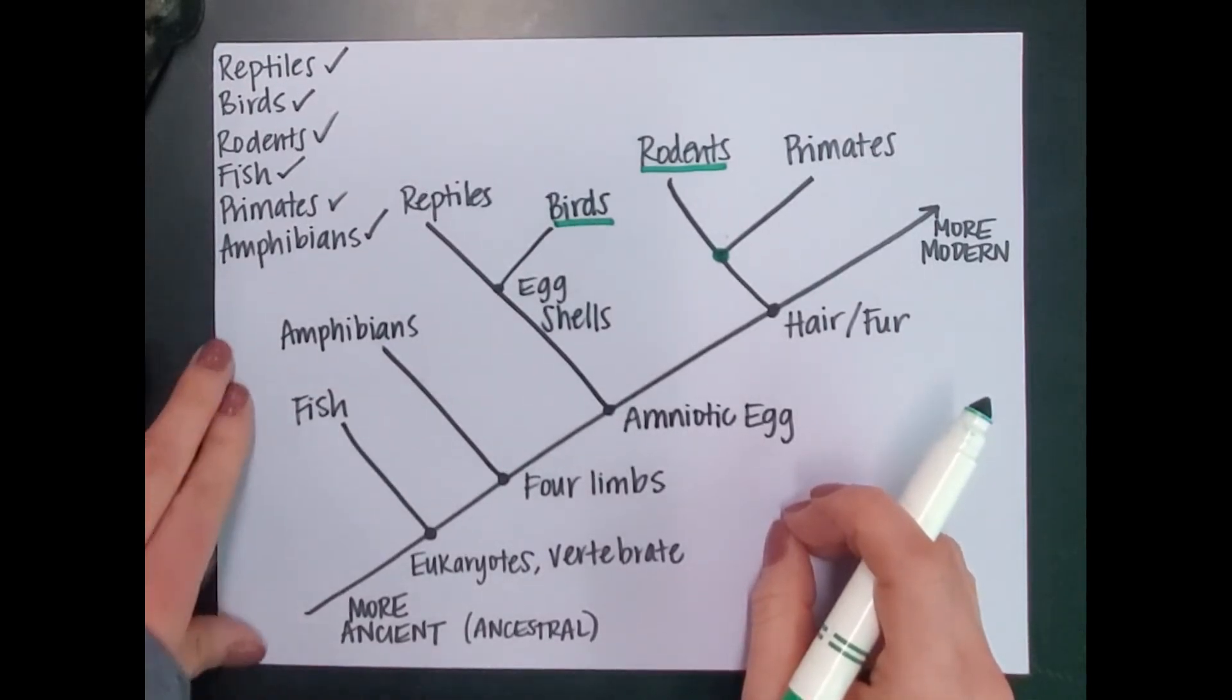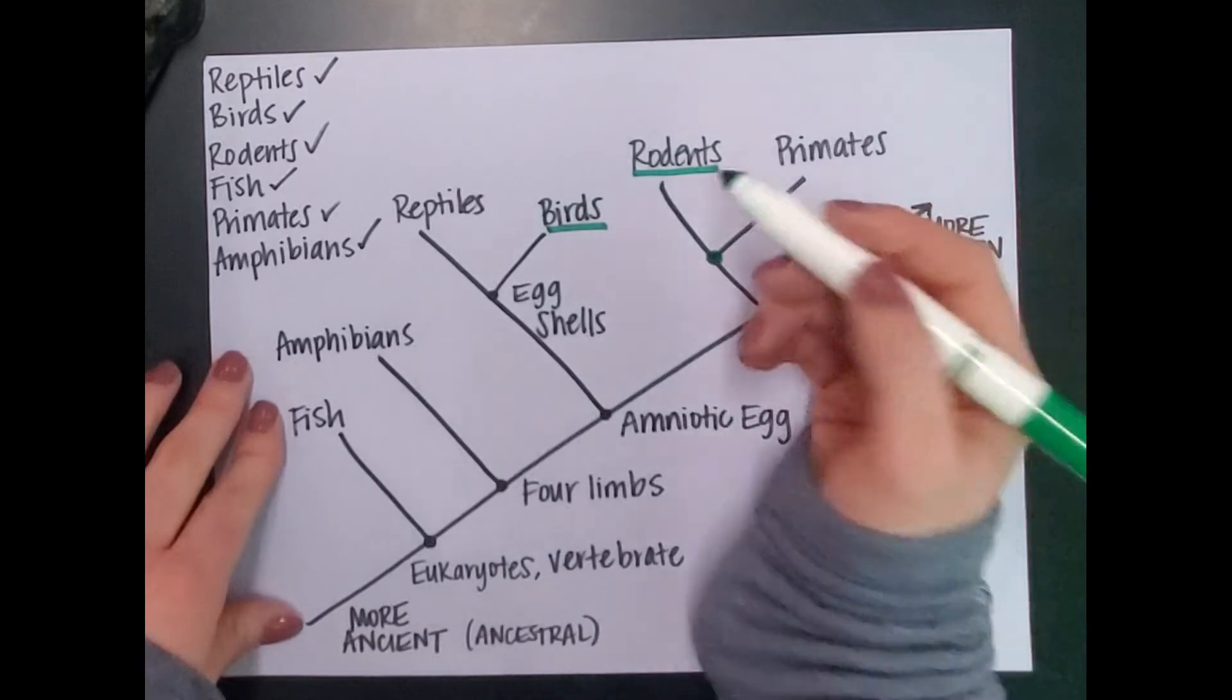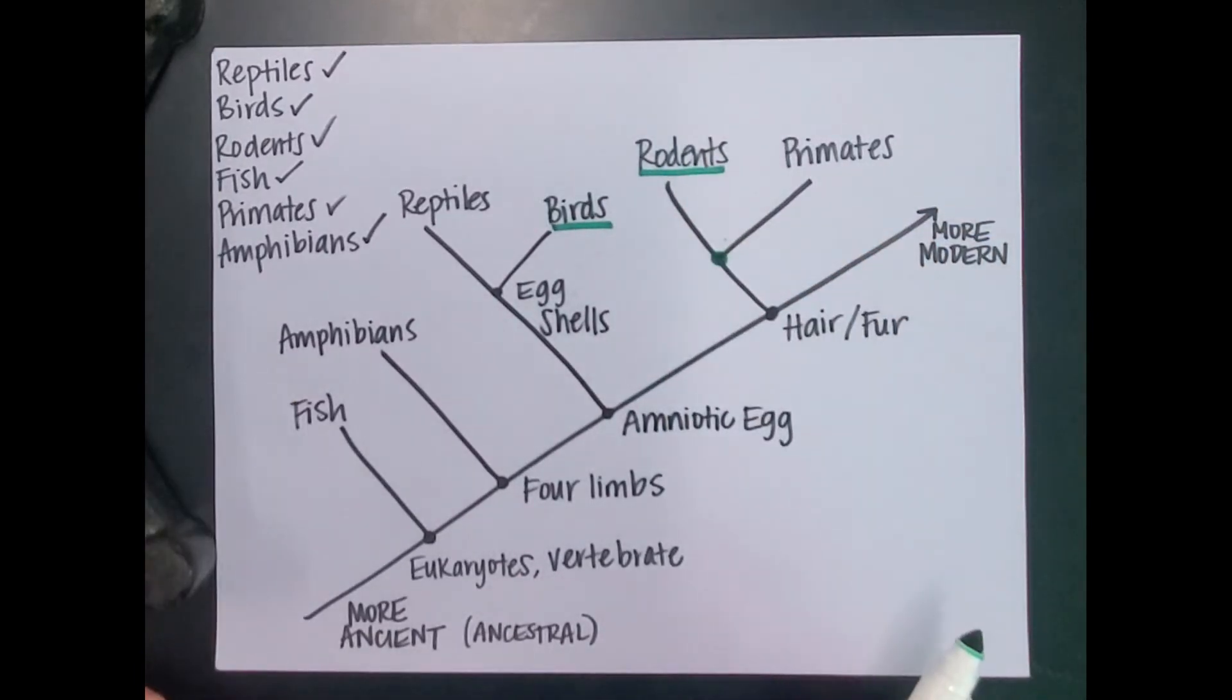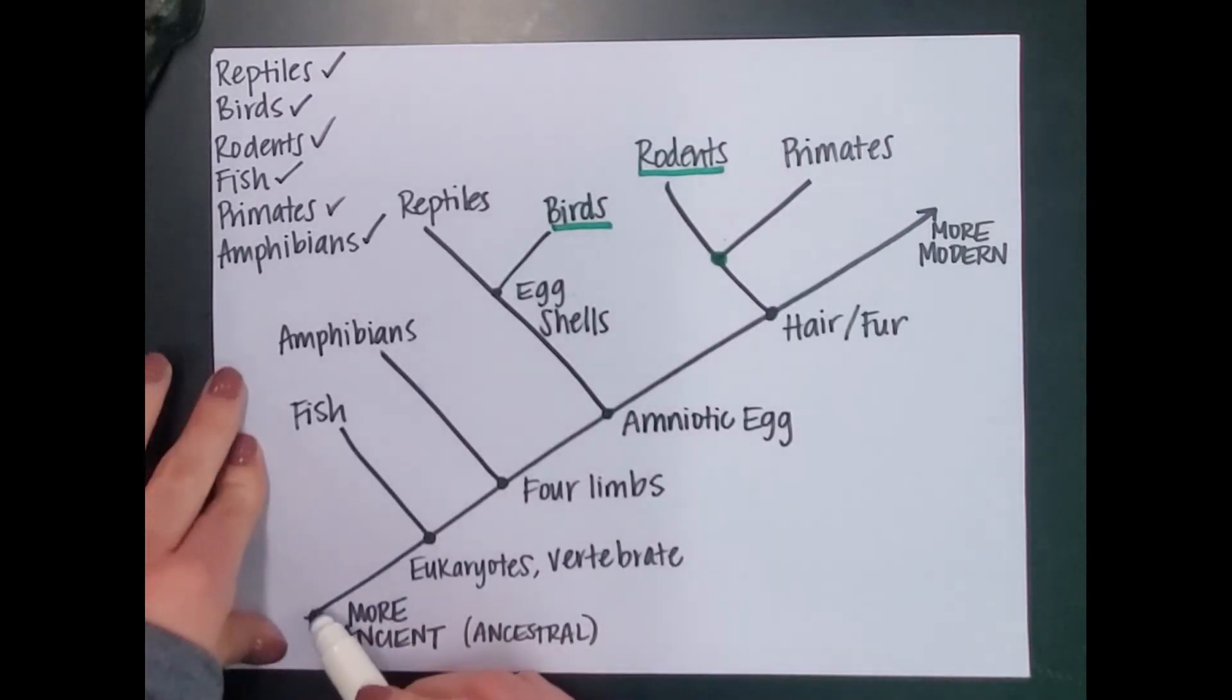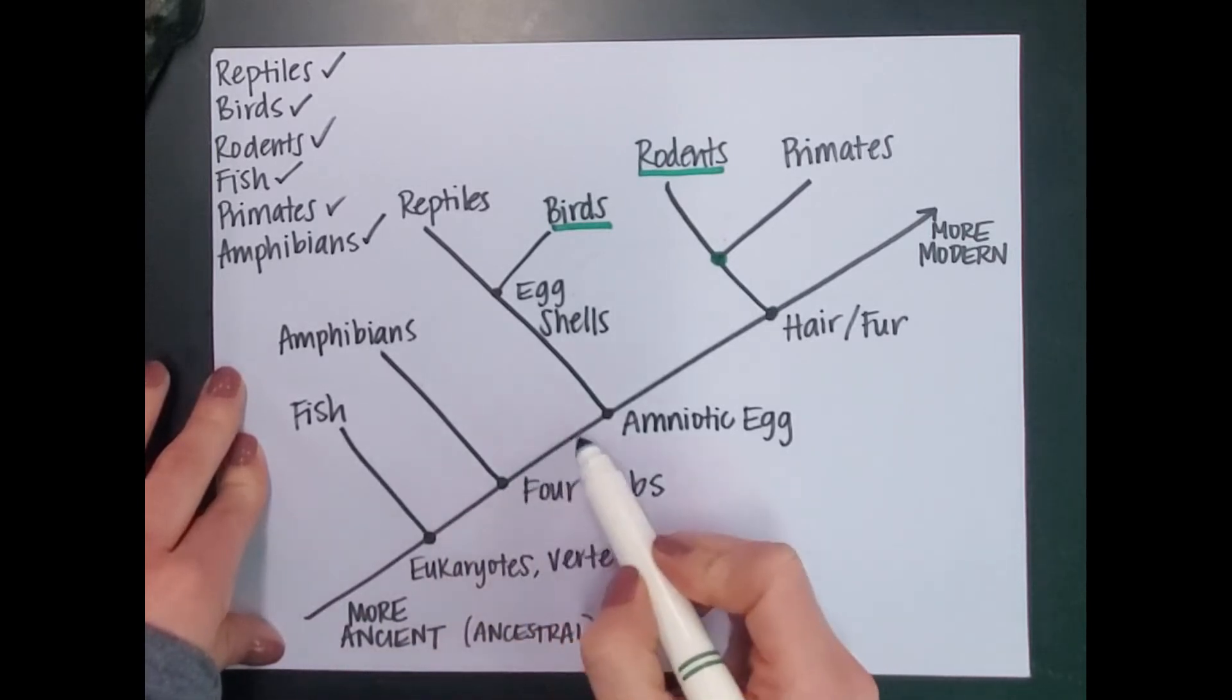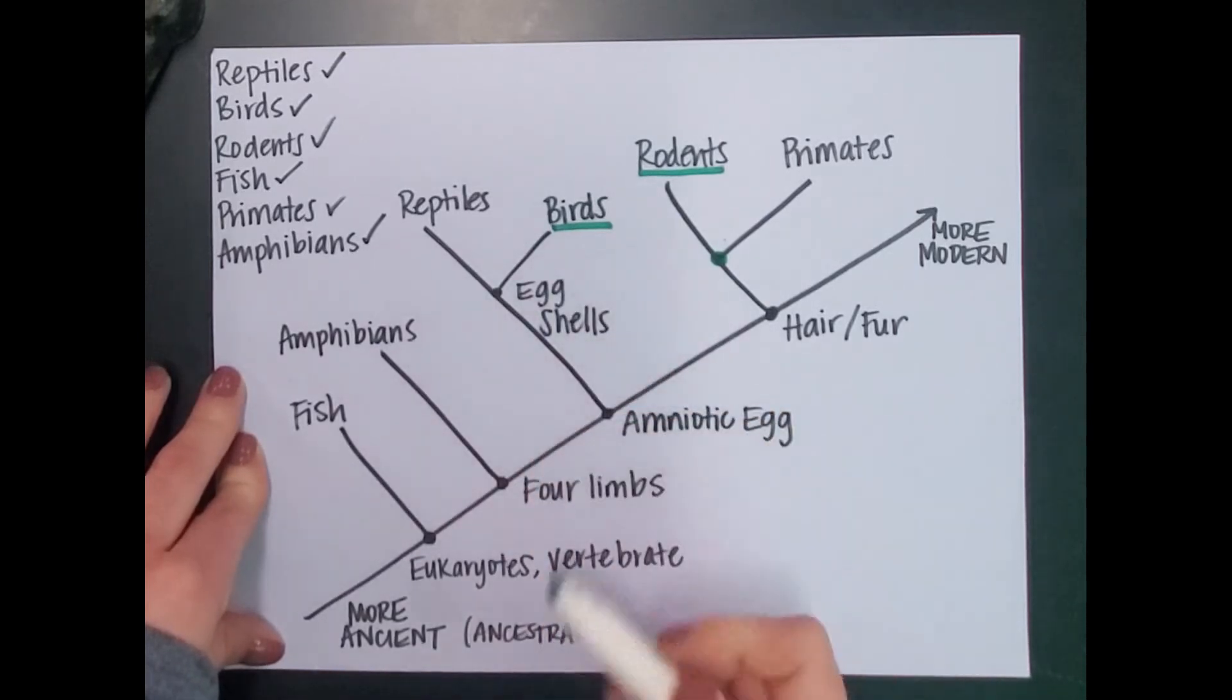The last thing I want to show us is how to figure out what certain species or groups have in common with each other. So if I say I want to know what rodents and birds share, what characteristics do they have in common? I will go down here, and I'll go to birds first. Birds are eukaryotes with vertebrae. They have four limbs. They have amniotic eggs. And they have eggshells. So they have those four.